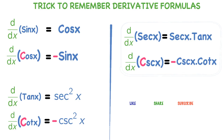Derivative of cosecant x — cosecant x starts with C, so definitely minus will be there. Derivative of cosecant x equal to minus cosecant x into cot x. It is easy to remember. I hope these tricks help you to learn the formulas. Take your time, practice a little bit while practicing these formulas. Remember these tips and you can easily learn these formulas.